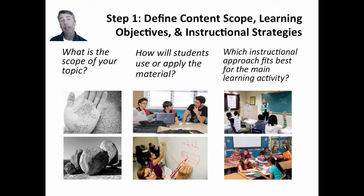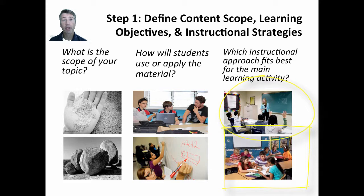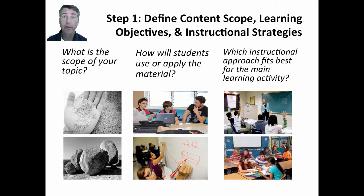So we want to think about grain size, objectives and outcomes, and instructional approaches. Do we want to do whole group? Do we want to do small group and small learning activities? If you're going to be teaching the whole period, you'll probably want a variety of activities where sometimes they're working in groups, sometimes working alone, and parts of the class where you're talking to them as a whole class in a discussion or a lecture.